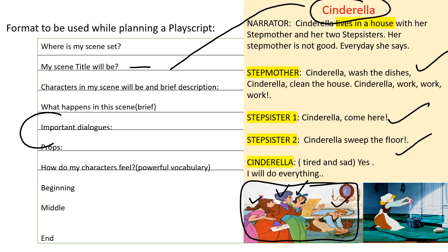Props means the things that are used in the play script. What are the things used? You can find a cloth or a mop here, and a given list of work — a paper. So the props can be the cloth, the mop, or the given list.